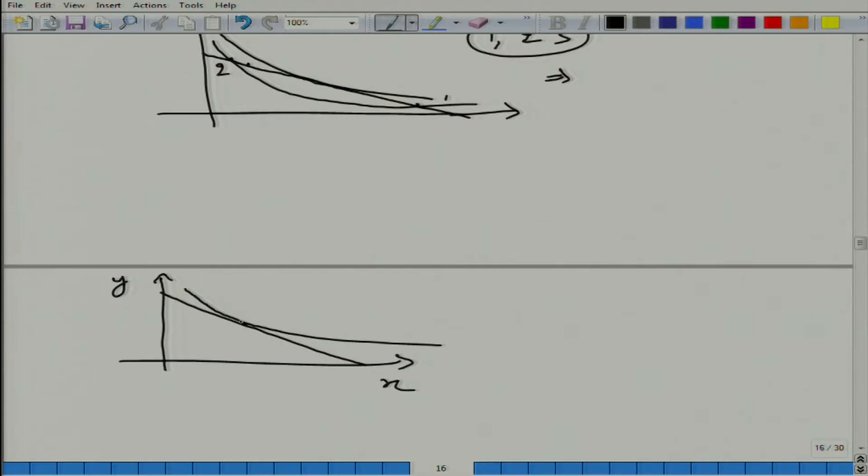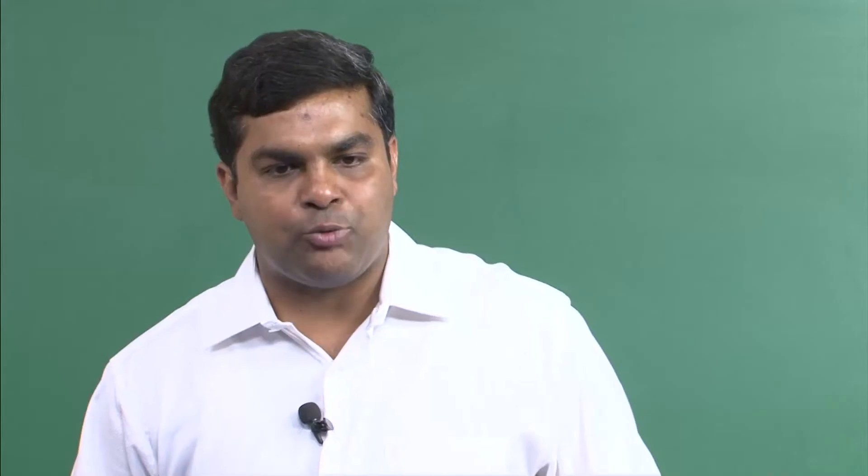What is the special property of this point? It is the tangent point, point of tangency. In other words, if we get the slope of indifference curve at this point, it is equal to the slope of budget line at that point.